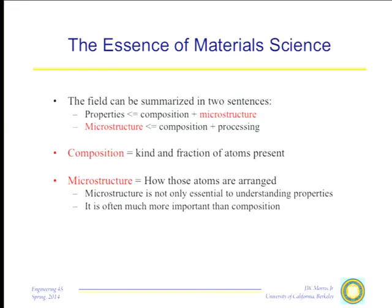Going back to what we're going to be talking about: the field of material science can really be summarized in two sentences. The properties of a material are determined by its composition — what atoms are in it — and its microstructure, which is how those atoms are arranged. The microstructure is the critical element and that's determined by the composition and the processing that the material has received.